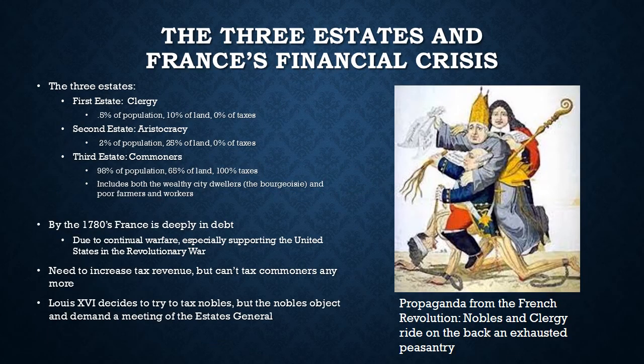The roots of the French Revolution go back to a financial crisis that proved to be difficult to resolve because of lasting inequalities in French society. French society was divided into three estates. The first estate was the clergy. The first estate controlled only 0.5% of the population and yet it controlled 10% of all of France's land.